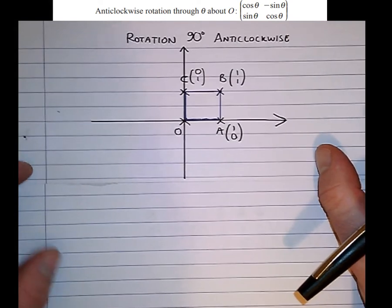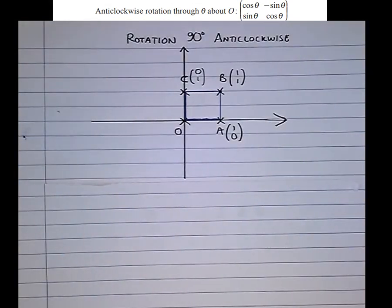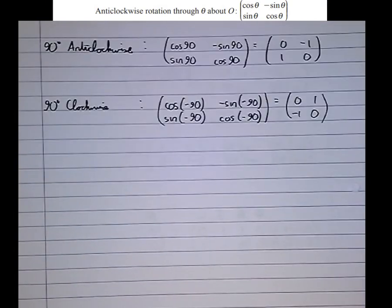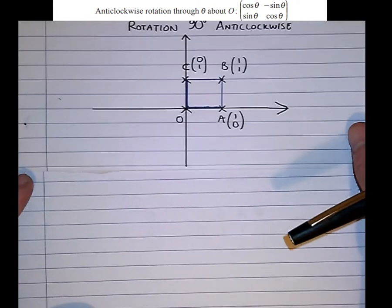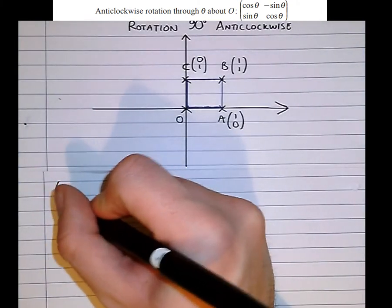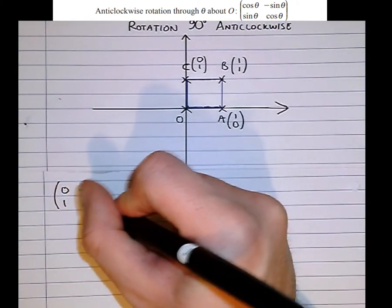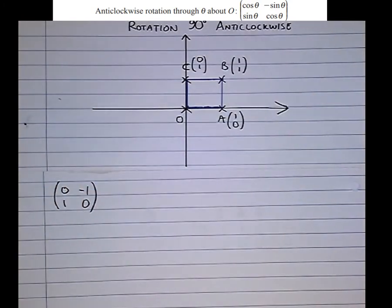So rotation 90 degrees anticlockwise, we're going to apply that rotation to this unit square. So the matrix we need to use is 0, 1, minus 1, 0. So 0, 1, minus 1, 0. And I'm going to make an anticlockwise 90 degree rotation using this matrix.